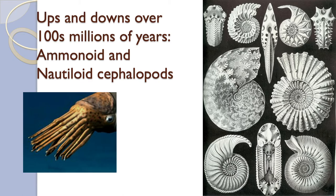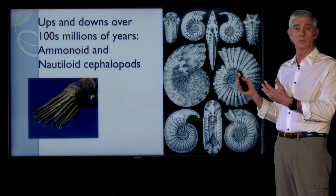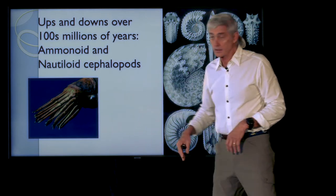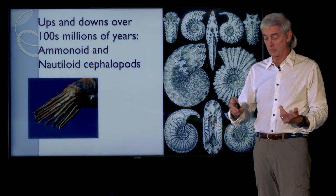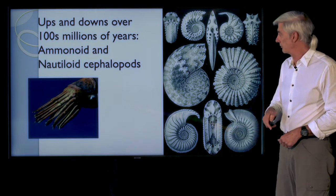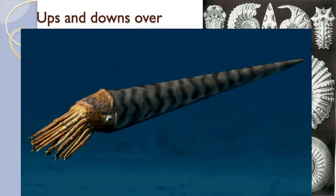The first group we're going to talk about that made it through a number of those mass extinctions are an amazing group of organisms for which we have actually very few living examples. They're the ammonoids and the nautiloids. They look like squid and cuttlefish and they're related to squid and cuttlefish — they're cephalopods. But instead of being soft-bodied, ammonoids have a hard shell that covers the entire body, and so do nautiloids.